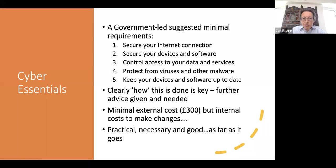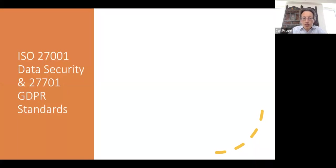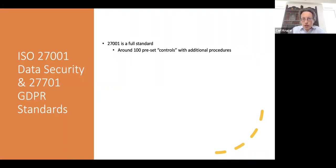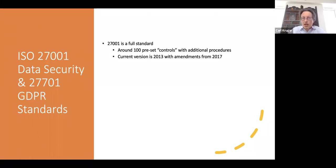Something like the ISO 27001 standard — with the add-on as necessary — gives you a lot more information. ISO 27001 is a full standard with about 100 preset controls, slightly more at the moment, shortly to be slightly reduced, with additional procedures required. For each data item you need to ensure that every relevant control is applied and in place. There's a current version from 2013, amended in 2017, with probably another amendment in the next year or two.